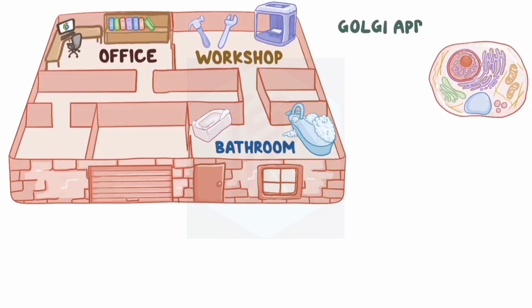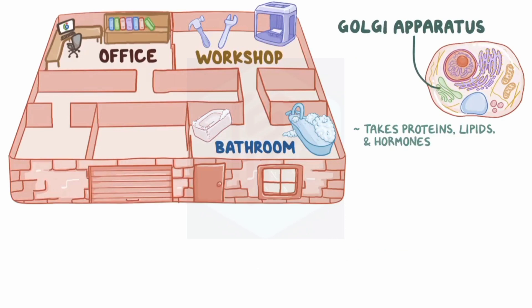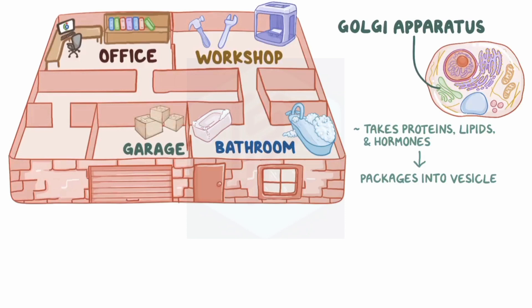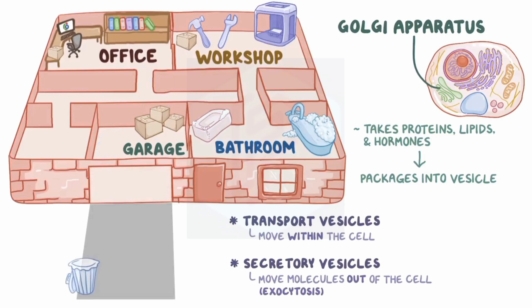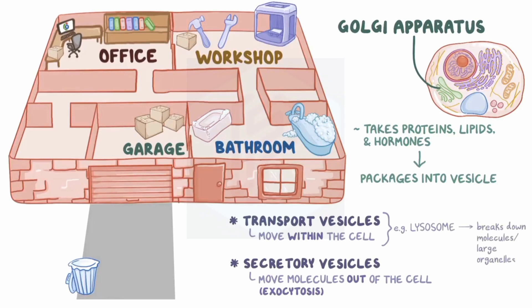Another organelle called the Golgi apparatus takes the proteins, lipids, and hormones that are generated in the rough and smooth endoplasmic reticulum and packages them into a vesicle made of a double layer of phospholipids that are then distributed around the cell. Think of the Golgi apparatus like the garage of the apartment, where you have all your packed up boxes that you sometimes move and store in other rooms. There are transport vesicles which move within the cell, and secretory vesicles which move molecules out of the cell, a process known as exocytosis. An example of a vesicle that stays in the cell would be the lysosome, which contains enzymes that can help break down other molecules, as well as large organelles that might be damaged.